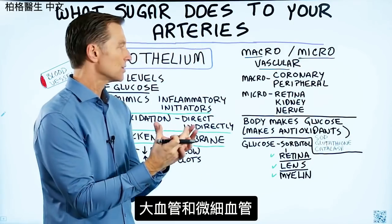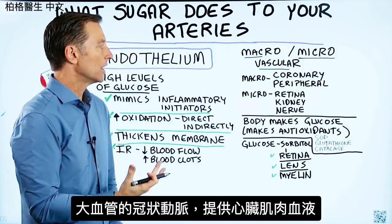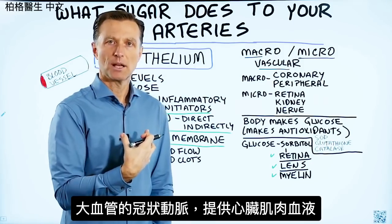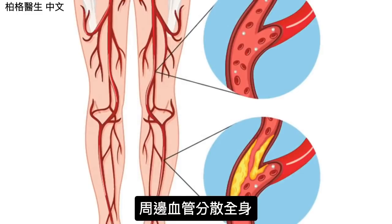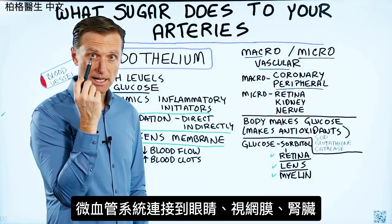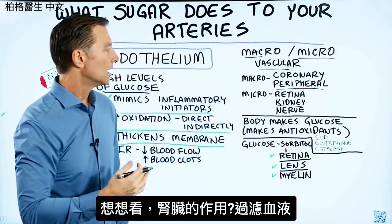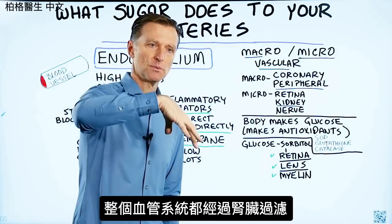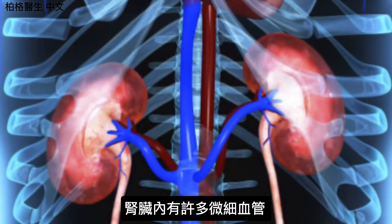The macrovascular system includes the large vessels — like the coronary artery, which supplies the heart muscle, and peripheral arteries throughout your body. The microvascular system includes small capillaries going to the retina of the eye and the kidney. The kidney filters your blood, so it has an enormous number of capillaries running through it.